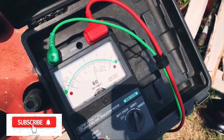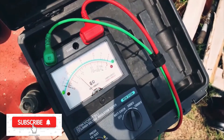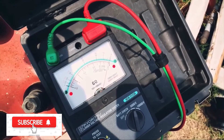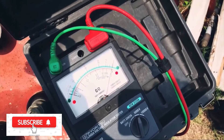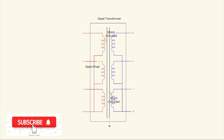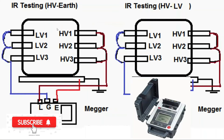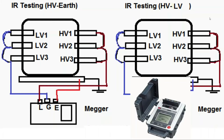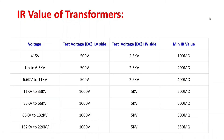R values of transformers: as shown in the figure, test voltage on the 415 V side — DC LV side 500 V test voltage; DC HV side 2.5 kV. Minimum insulation resistance value: 100 megaohms.